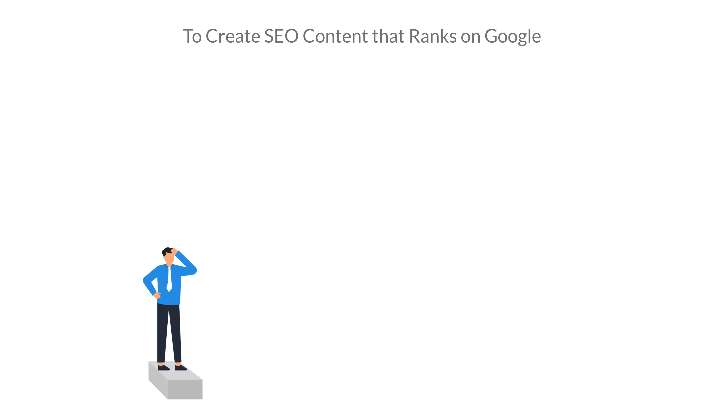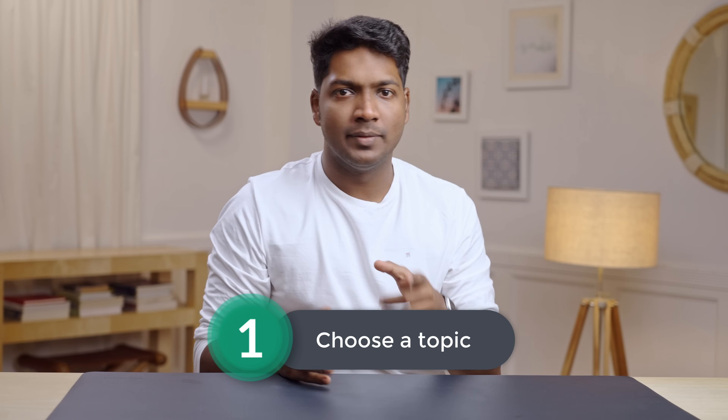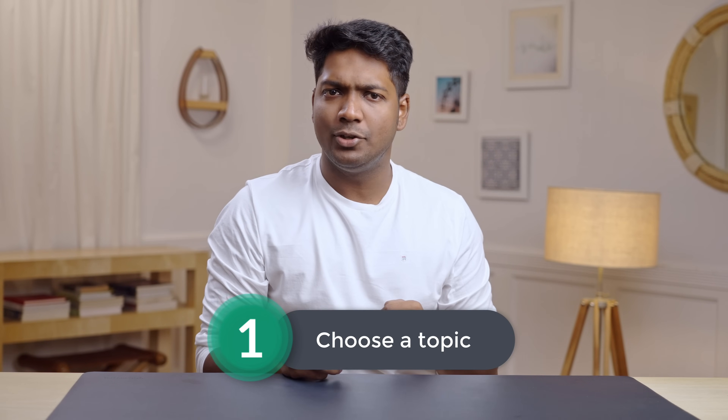To create SEO content that ranks on Google we are going to do seven simple steps that you need to follow. The first step is to choose a topic. If you already have a topic in mind then you can skip this and go to the next step. However, if you don't know what topic to choose, we have an AI tool that can generate topic ideas for your content.